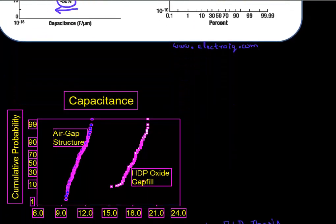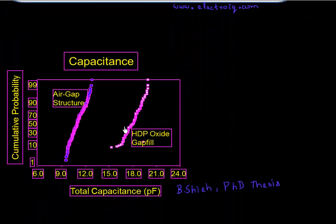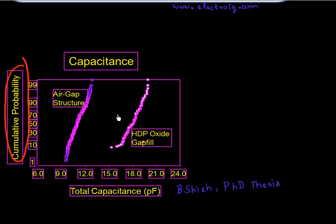And here's some additional experimental data. So that data I showed you was on one particular data point. Here's the probability distribution. So again, you can clearly see that if you have a structure filled with oxide versus if you have a structure filled with air gap, you see a substantial reduction in your overall interconnect capacitance.